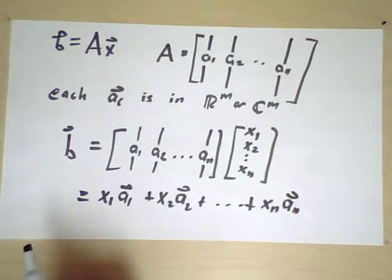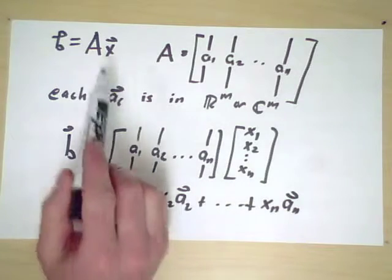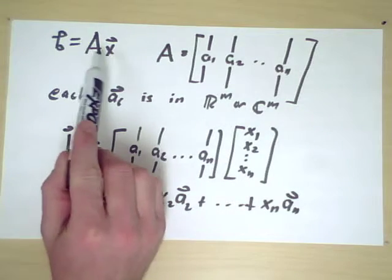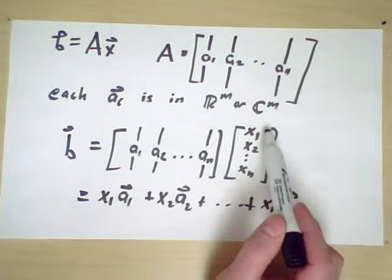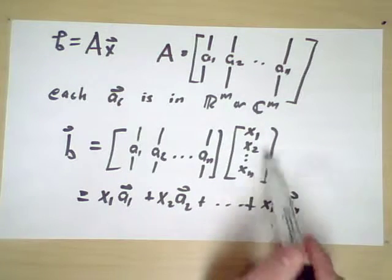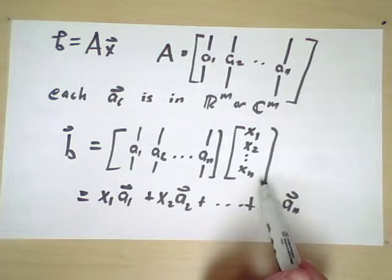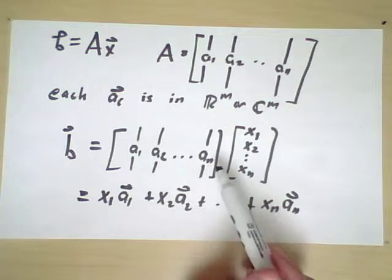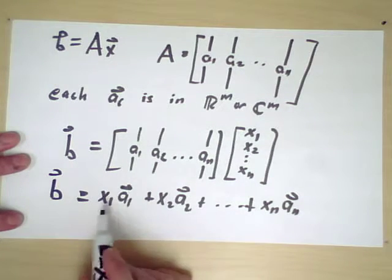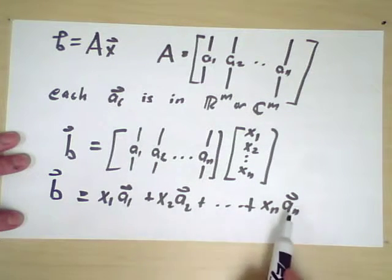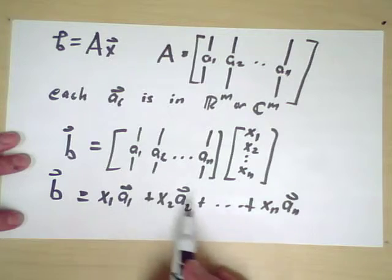So in this sense, I'm thinking of not of A as being the function and x as being the input, but rather as x as being the function, or at least some sort of operation, acting on a list of inputs a_1 through a_n. So in other words, we are constructing the vector b out of the columns of the matrix A by choosing the coefficients x.